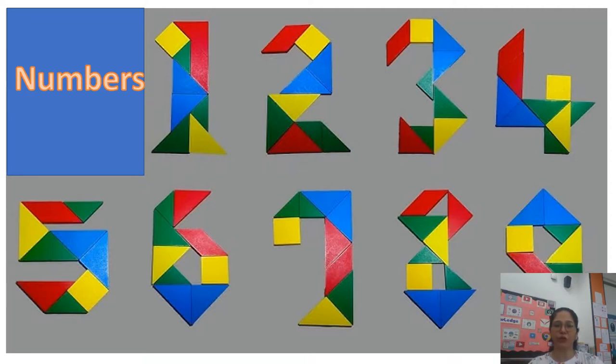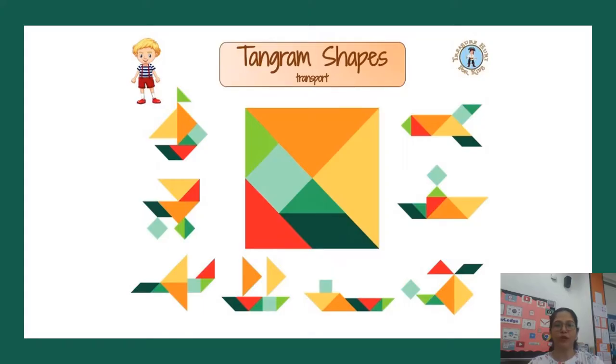Tangrams can be used to display transport. Here you can see a boat. This is a cart. This is an airplane. Next is a sailboat, a ship, helicopter, ferry and a rocket. A huge array of transport can also be reflected using tangrams. Isn't it creative and full of fun? Yes.